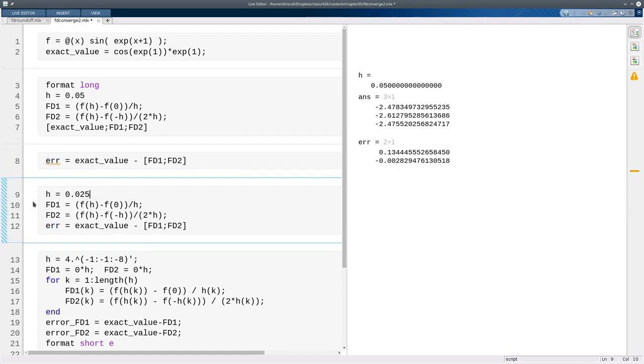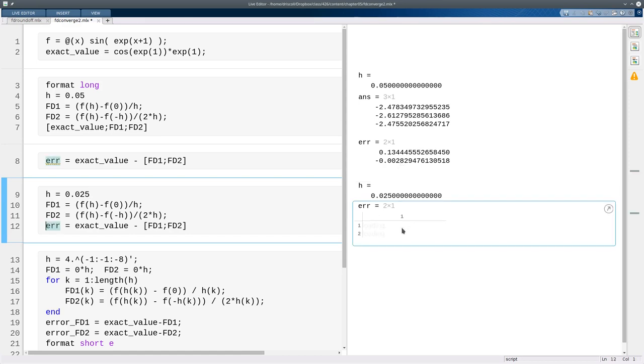I'll do the same thing after cutting h in half now. So for a first order method you expect the error to go down by a factor of two to the first power, and in the second order it should go down by a factor of about two to the second power, and that's what we see.